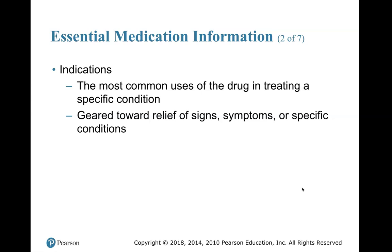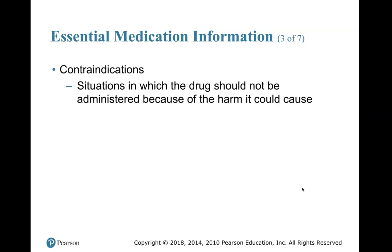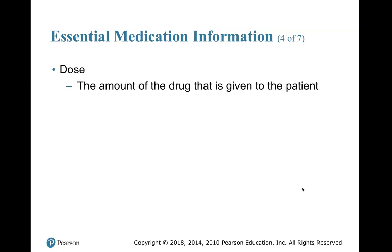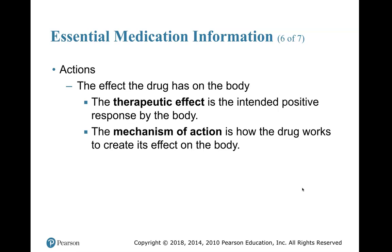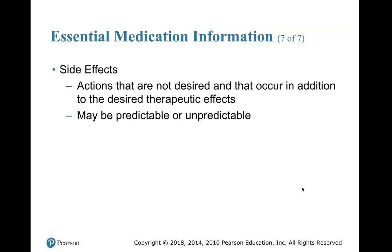Indications are the most common uses of drugs in treating a specific condition, geared toward relief of signs, symptoms, or specific conditions. Contraindications are situations in which the drug should not be administered because of the harm it could cause. Dose is the amount of drug given to the patient. Administration is the route by which the medication is given. Actions are the effects of the drug on the body — the therapeutic effect is the intended positive response, and the mechanism of action is how the drug works. Side effects are undesired actions that occur in addition to the desired therapeutic effect and may be predictable or unpredictable.